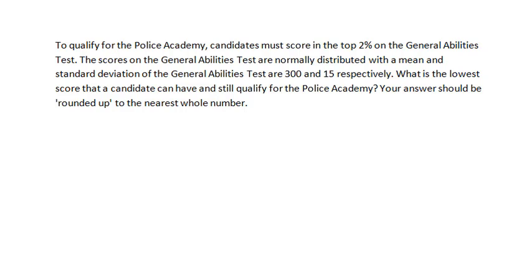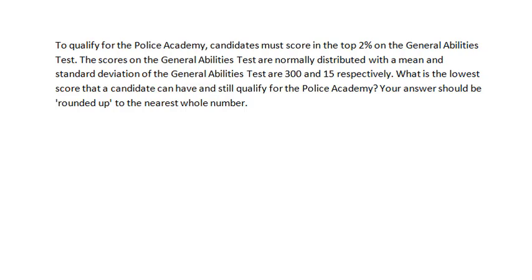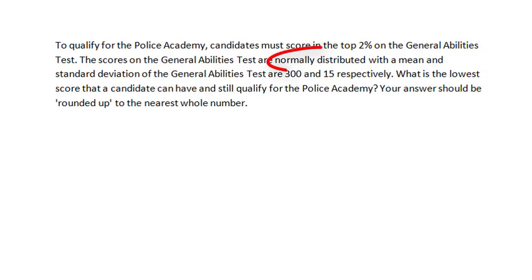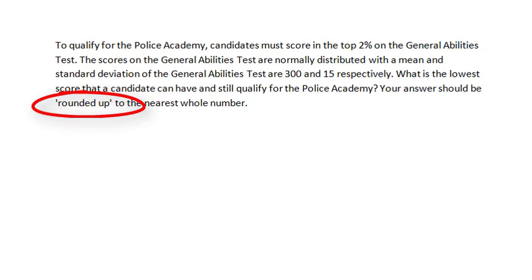This problem states that to qualify for the Police Academy, candidates must score in the top 2% in the General Abilities Test. The mean and standard deviation are given as 300 and 15, respectively. We are asked what the lowest score is that a candidate can achieve and still qualify for the Police Academy. We are also told that the distribution is normal and that our answer should be rounded up to the nearest whole number.